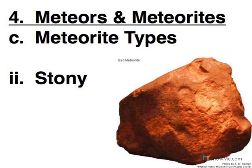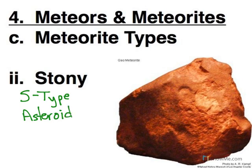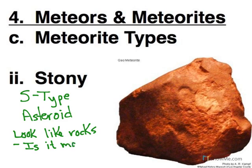Stony meteorites are made of silicate, just like an S-type asteroid. Iron meteorites are easy to find because they stand out, but stony meteorites are a lot harder because they look like rocks — they tend to blend in. A way to test is: is it magnetic? Iron meteorites definitely are magnetic, and stony meteorites typically are magnetic as well, because there are usually little flakes of iron in there. So if you find an unusual-looking rock and you want to test to see if it's a meteorite, the first thing you want to do is see if a magnet will stick to it.